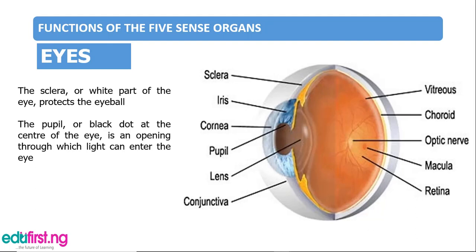The eyes allow us to see the things around us, help us to judge depth, and interpret new information. For example, when you see a building you can tell whether it's painted, a storey building, a flat, a single room, or a supermarket. With our eyes we can also identify colours and differentiate whether an object is blue, red, green, white, or any other colour.